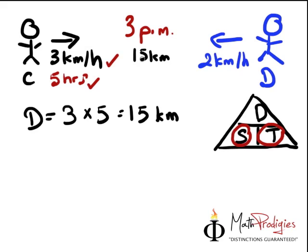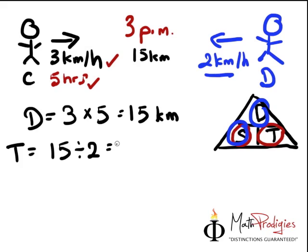Now the question is, what was the time taken by Davis to complete the distance? So time taken for Davis is equal to, since we have his speed which is here, and we have the distance, we can actually do it by taking D over S, which is distance is 15, divided by his speed, which is 2, and hence it will give you 7.5 hours. Very simple.